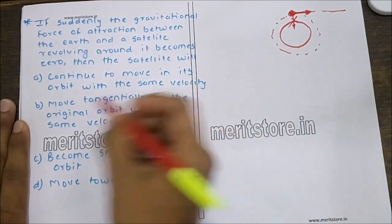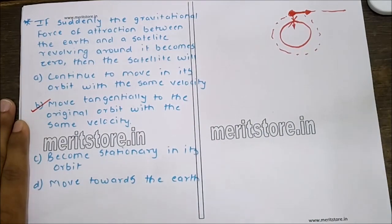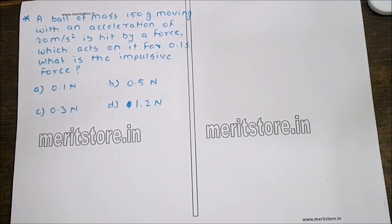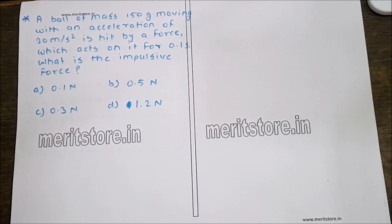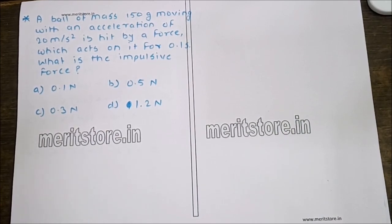A ball of mass 150 grams moving with an acceleration of 20 m/s² is hit by a force which acts on it for 0.1 seconds. What is the impulsive force? The options given are 0.1 N, 0.5 N, 0.3 N, and 1.2 N.